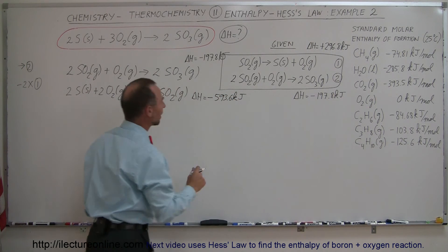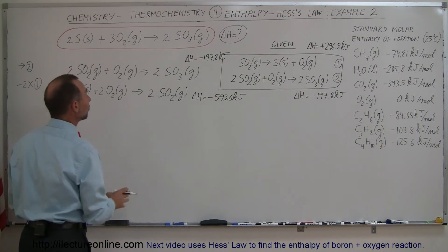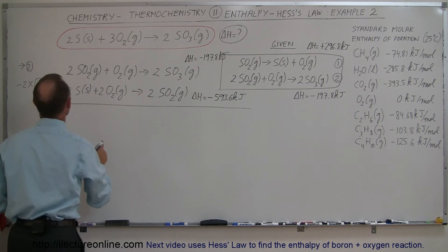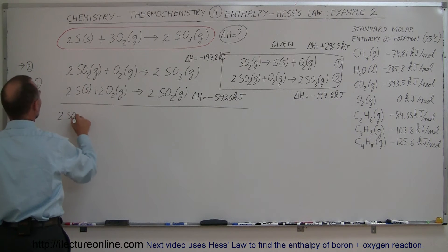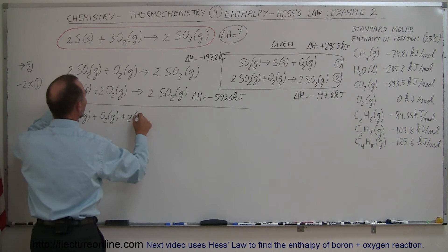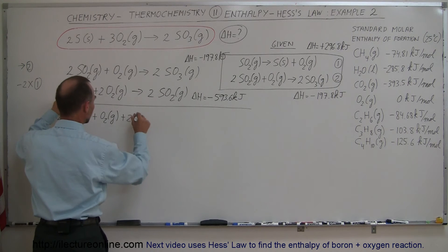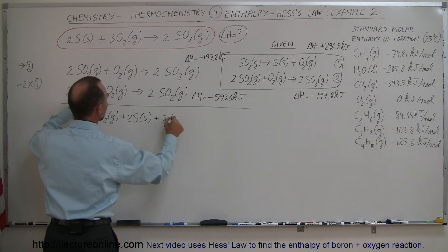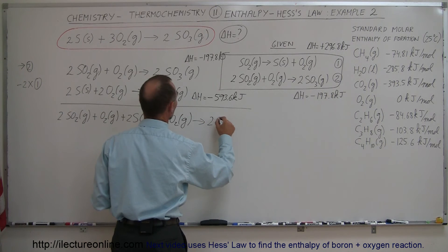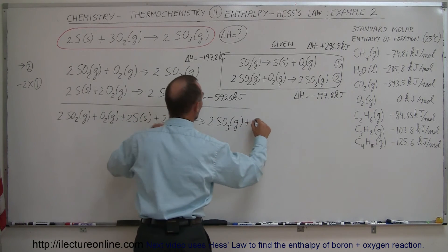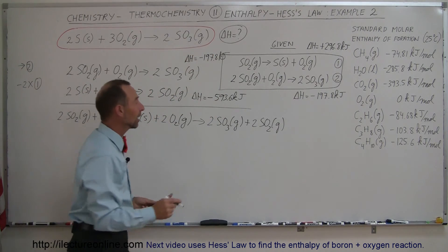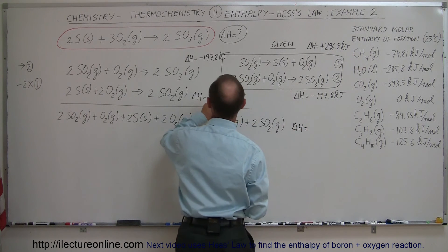Now I have the suspicion that when I add these two equations together I will get something exactly matching our target. So we add the two equations together. On the left side we get two moles of sulfur dioxide gas plus one mole of oxygen gas plus two moles of solid sulfur plus another two moles of oxygen gas — those are all the reactants. On the right side we get two moles of sulfur trioxide gas and two moles of sulfur dioxide gas. Adding the two enthalpy changes gives ΔH equal to −197.8 plus 593.6 kilojoules.